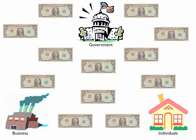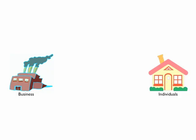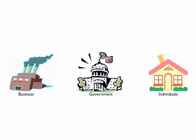There are three structures in a free market economy: businesses, which represent firms; individuals, which represent households; and the government. The resource market, also known as the factor market, is a market where the factors of production — land, labor, capital, and entrepreneurship — are bought and sold.